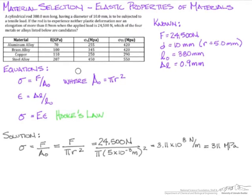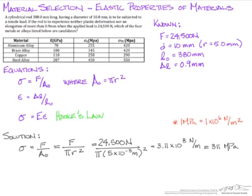Just as a reminder, 1 megapascal is equal to 1 times 10 to the 6th newton meters squared. So, our 311 megapascals is the applied stress that we're going to end up seeing on this rod.